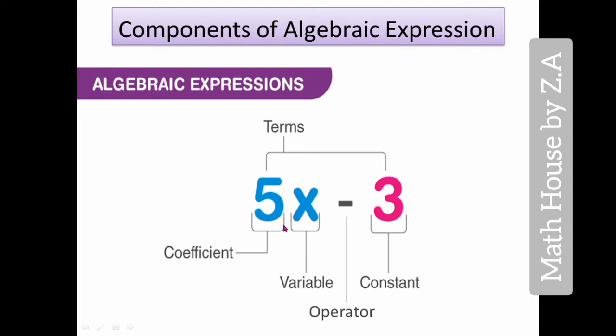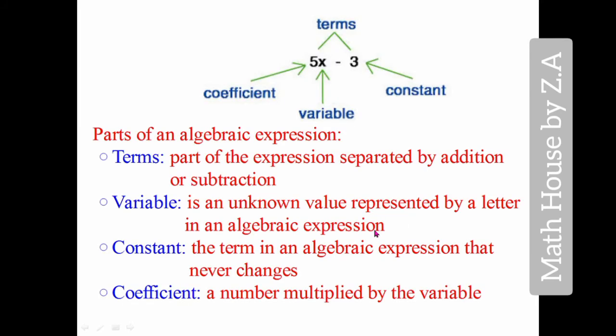In 5x, 5 is a coefficient and x is a variable, and 3 is a constant. What are coefficients, variables, and constants? Here are the explanations of terms, variables, constants, and coefficients.